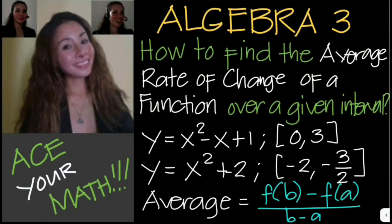In this video, you will learn how to find the average rate of change of a function over a given interval. We use the formula: average equals f of b minus f of a, over b minus a, where a and b are the values for the interval.